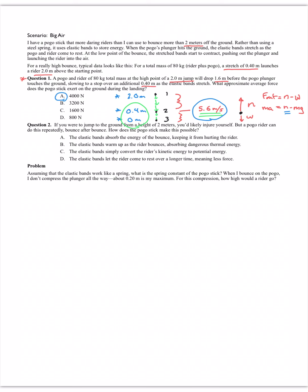The conceptual question: if you jumped from 2 meters you'd break yourself, but the pogo rider can do this repeatedly. This comes back to impulse-momentum: force equals delta P over delta T. When you hit the ground, your momentum goes to zero — you can't change that. But you can make the force smaller by making the time interval bigger. That's what the elastic bands do: they let the rider come to rest over a longer time, thus reducing the force.